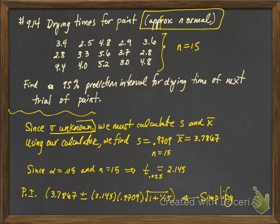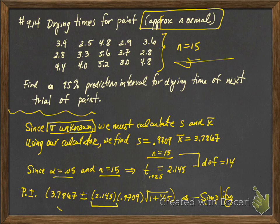Since sigma is unknown and our n is not large, we're going to use s, which we are going to calculate from our sample, and x bar. All right, so we can plug that into our calculator. We find s to be 0.9709 and x bar to be 3.7867, and n is 15. This means our degrees of freedom are 14. Since we're using s, our alpha is 0.05 and n is 15, we find t sub 0.025 to be 2.145. So that just goes in place of the z from the above formula. So it's our sample mean plus or minus our t score times s times the square root of one plus one over the size of our sample.